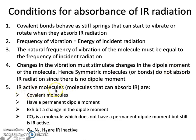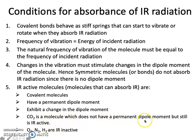IR active molecules are those which absorb IR radiation and show a peak in the IR spectrum. The conditions are: the molecule should be covalent, it should have a permanent dipole moment, and there should be a change in dipole moment after absorbing radiation. Carbon dioxide is an exception — it has no permanent dipole moment but is still IR active. Oxygen, nitrogen, and hydrogen are symmetric molecules and hence IR inactive.